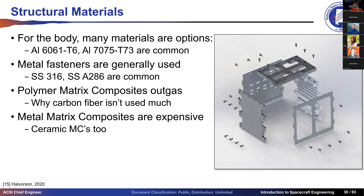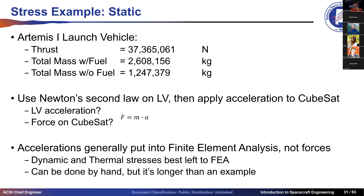Common materials: Aluminum 6061-T6 and 7075-T73 are widely used; aerospace engineers generally avoid 5000-series aluminum. Fasteners are commonly stainless steel 316 — widely available, reliable, and machinable — while stainless steel A286, used in jet engines, is used when high reliability justifies the cost. Polymer matrix composites like carbon fiber outgas heavily, making the structure brittle; metal matrix composites are expensive; ceramic matrix composites are primarily reserved for propulsion rocket nozzles.